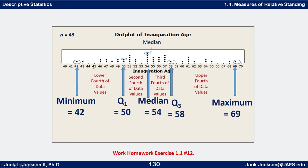Counting from the bottom to the 22nd value gives us 54 as the median. Checking from the top, the 22nd from the top is also 54, confirming it. So 54 is the median. The other 54s are counted as part of the lower half, but the specific median value is not counted as part of the lower half or upper half.